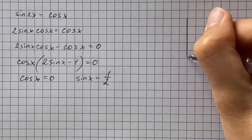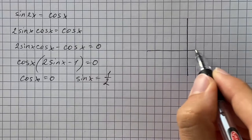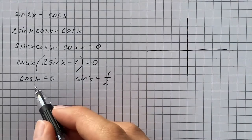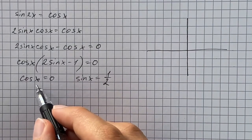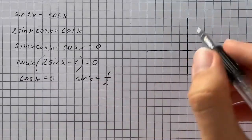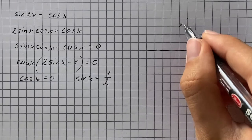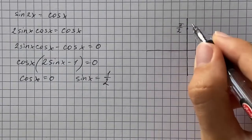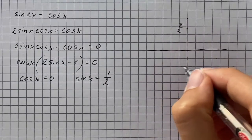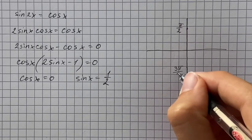So here we're going to use the unit circle. And cosine corresponds to x coordinate. So cosine is going to equal 0 at x equals pi over 2 and 3 pi over 2.